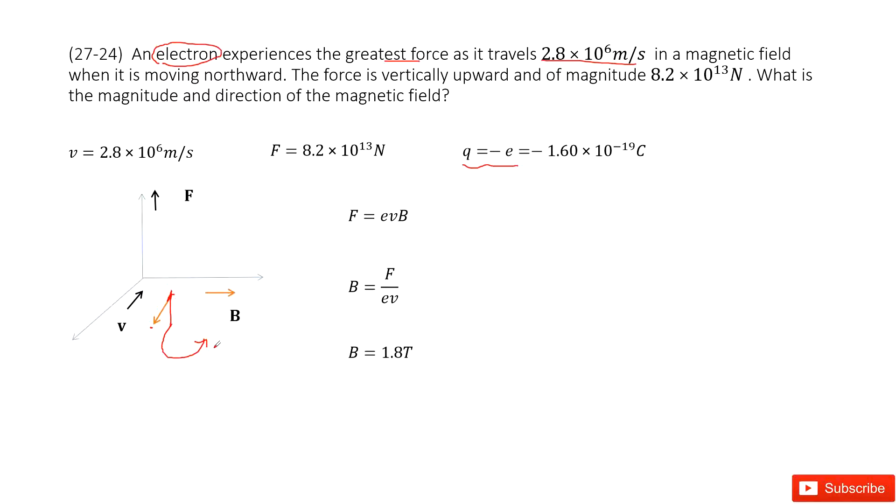You can just use your right hand to try it. So now we know the B. The magnetic field travels to the east.